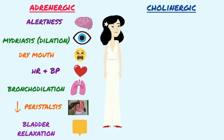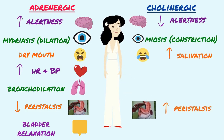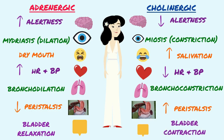In a cholinergic response, the neurological system is in more of a somnolent state. Pupils will be constricted. Digestive processes occur, such as increased salivation and peristalsis. Heart rate and blood pressure decrease. And the smooth muscle of the bronchioles within the lungs are no longer in a relaxed state, resulting in a bronchoconstriction response. When the bladder completely fills with urine, stretch receptors will initiate the micturition response, leading to bladder contraction and urinary sphincter relaxation, allowing the bladder to empty.